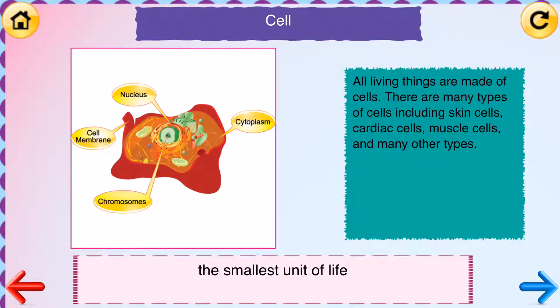Cell. The smallest unit of life. All living things are made of cells. There are many types of cells including skin cells, cardiac cells, muscle cells, and many other types.